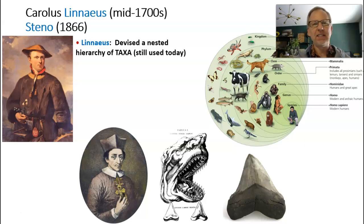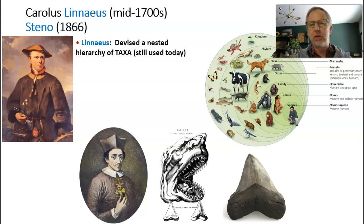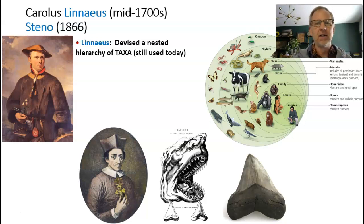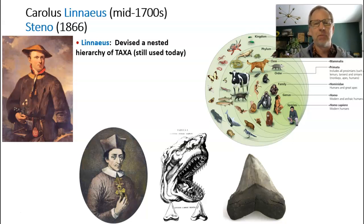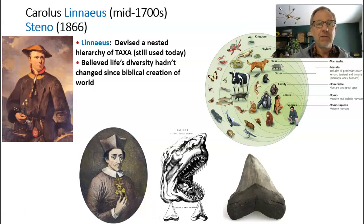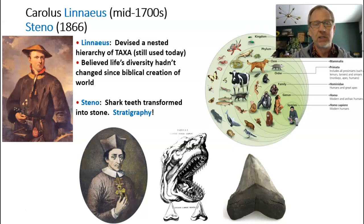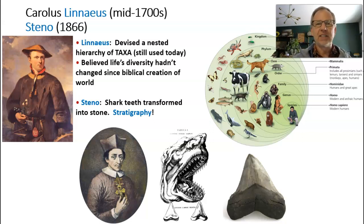Linnaeus inherited the idea that God had created all these groups, and he was doing his work to discover and name them. God created the mammalia, God created the amphibia, and God created all the bigger and smaller groups. He was just naming them, doing his duty. He believed that life's diversity hadn't changed since the biblical creation of the world — adopting the idea that life doesn't change, that it is created by God perfectly and is fixed in place.